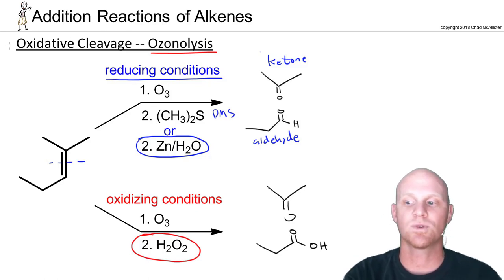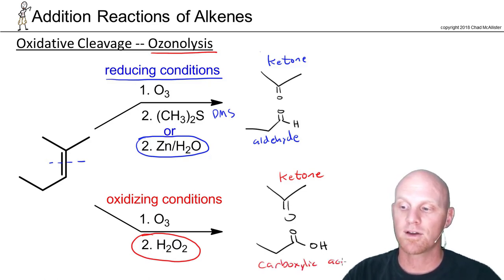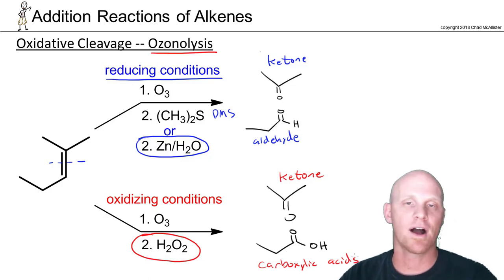So the key here is this. When you do this under oxidizing conditions, if you get a ketone, we'll find out ketones aren't largely oxidizable in any normal sense. And it's going to stay a ketone. But any aldehydes you form, or at least that you think you're going to form, instead form carboxylic acids under oxidizing conditions.